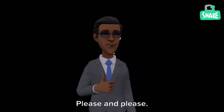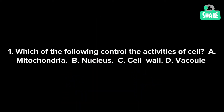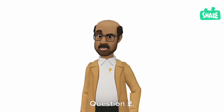Please subscribe to our channel. Question 1: Which of the following controls the activities of a cell? A. Mitochondria. B. Nucleus. C. Cell wall. D. Vacuole. The correct answer is B. Nucleus. It is also the hereditary unit of the cell.